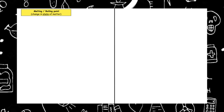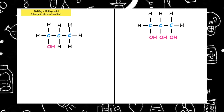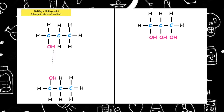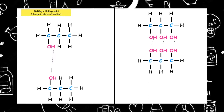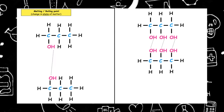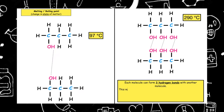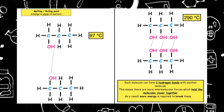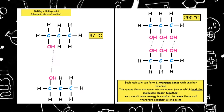The first property we're going to look at is the melting and boiling point, which is looking at change in state of matter. If we draw propan-1-ol and propan-1,2,3-triol, we know that they have hydrogen bonds. The molecules are closer together in propan-1,2,3-triol because each molecule can form three hydrogen bonds with another molecule. This means there are more intermolecular forces holding the molecules closer together, and as a result more energy is required to break these, giving it a higher boiling point than propan-1-ol.